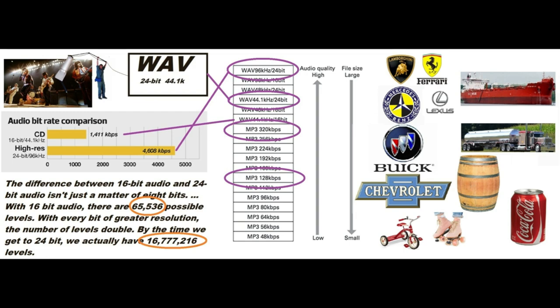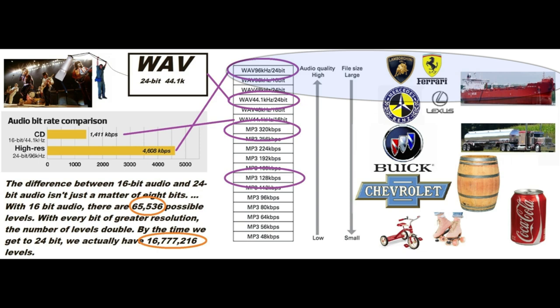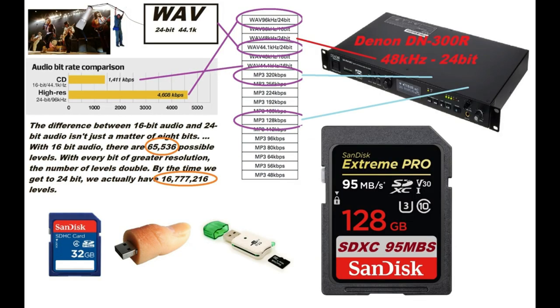WAV at 44.1 kHz, 24-bit, is like a Mercedes or Lexus and is about a tanker ship of data. The ultimate — although some audiophiles would want to differ — is WAV at 96 kHz, 24-bit, and is like a Lamborghini or Ferrari, also a tanker ship of data.